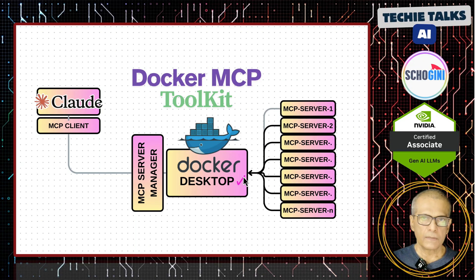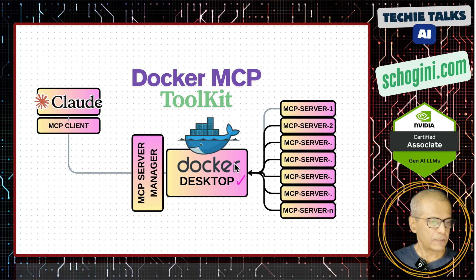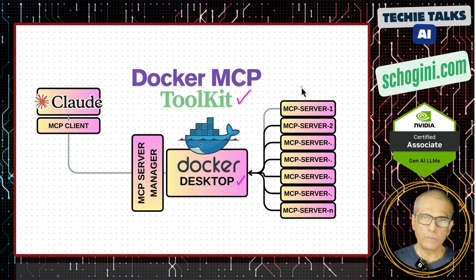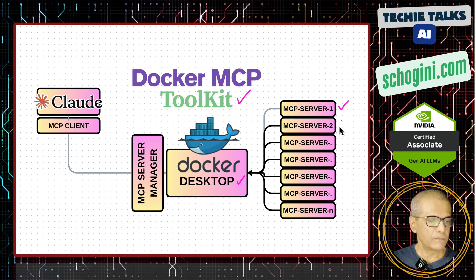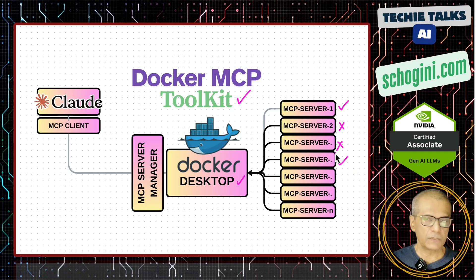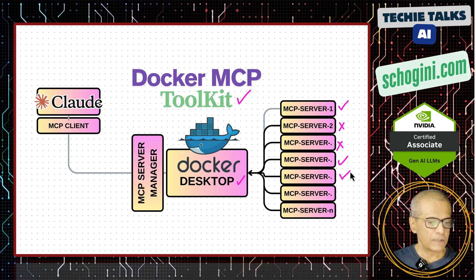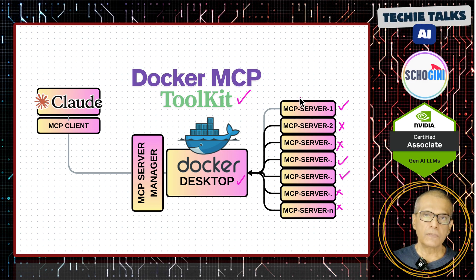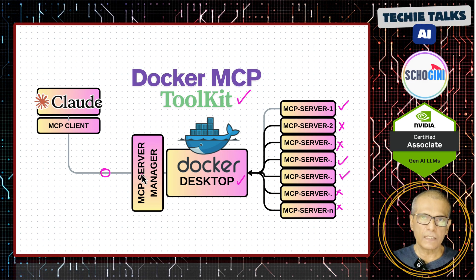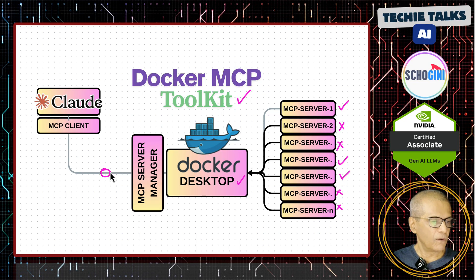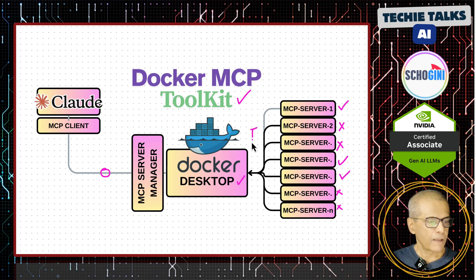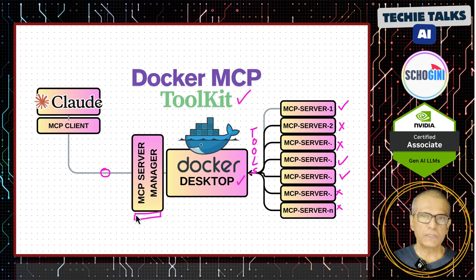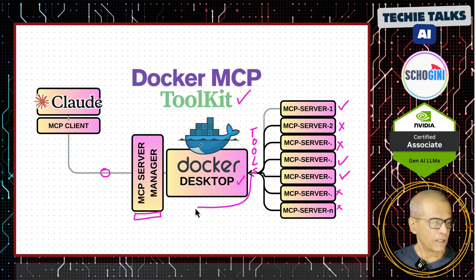Here we have Docker Desktop, which is very easy to install, and Docker Desktop has got a new toolkit section added. There you can search for a number of MCP server providers and enable them according to your need. Docker Desktop has got connections to a number of third-party MCP servers. A single connection to this Docker machine will give us access to all of these as tools. All these MCP servers are available as tools to this MCP server manager.